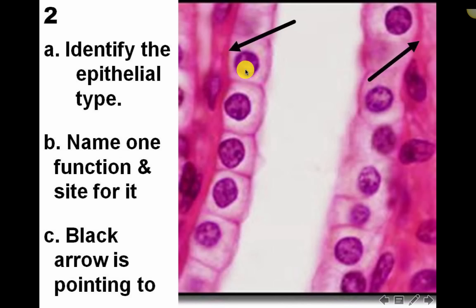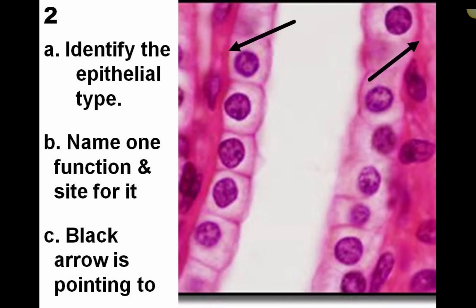Here we have one layer of nuclei of the epithelium, so this is simple. The cells are cubical because they have a central rounded nucleus and their face looks like a square. Name one function - secretion. Since it has secretion, we can say glands, serous follicles, or the duct of the exocrine gland, or the distal convoluted tubule of the kidney.